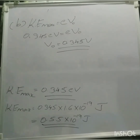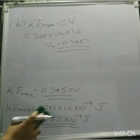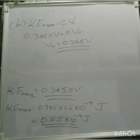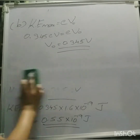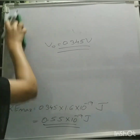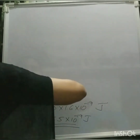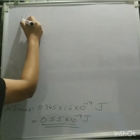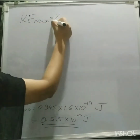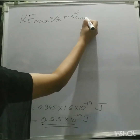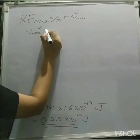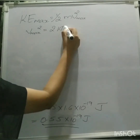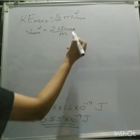Now we need to find the maximum velocity. To find the maximum velocity, we know the equation kinetic energy is half mV squared. From that we will get the velocity. Since velocity is usually represented in meters per second, we take the kinetic energy value in SI units, that is Joules. Kinetic energy maximum is equal to half mV² maximum, so V maximum squared is equal to 2 into kinetic energy maximum divided by mass.